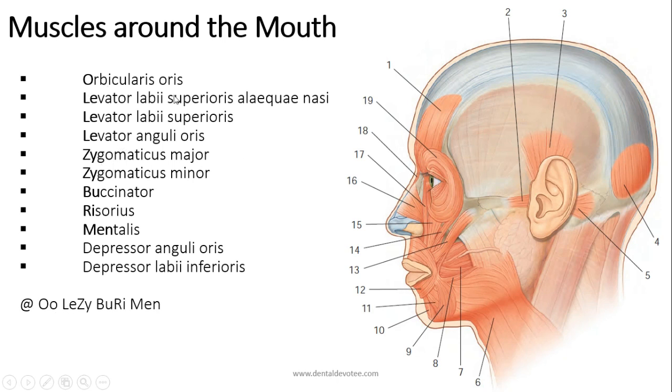We have three levators: levator labii superioris, levator anguli oris, and levator labii superioris alaeque nasi. Three levators, two zygomaticus major and minor.